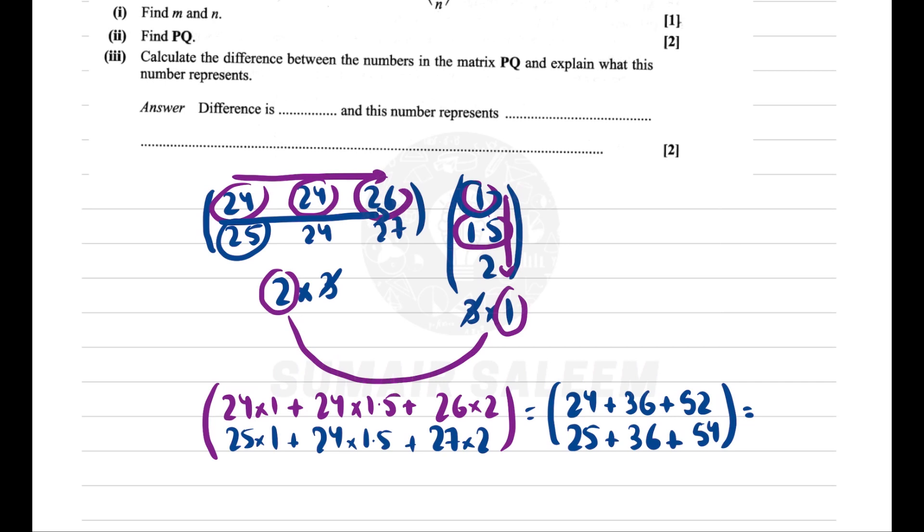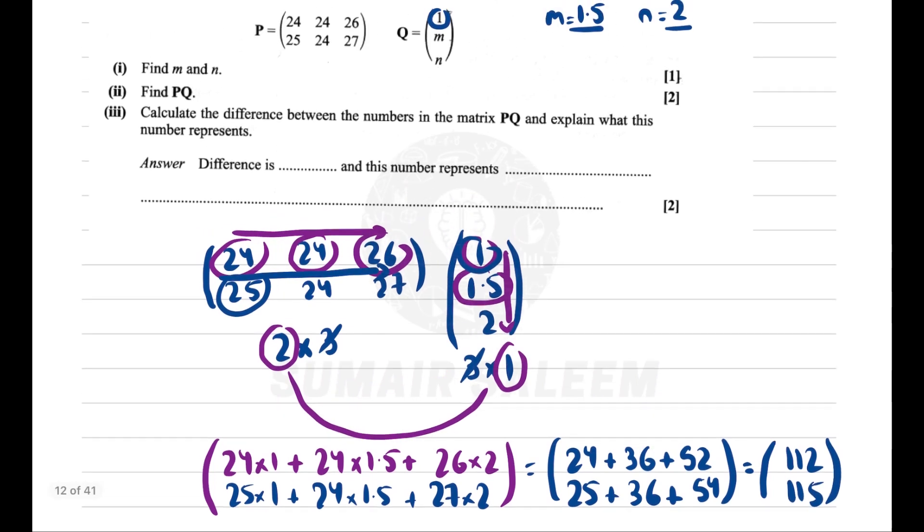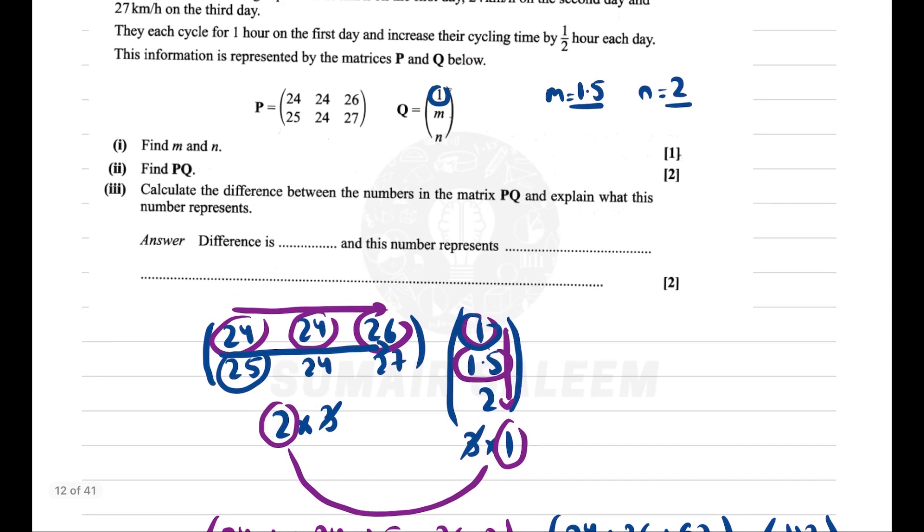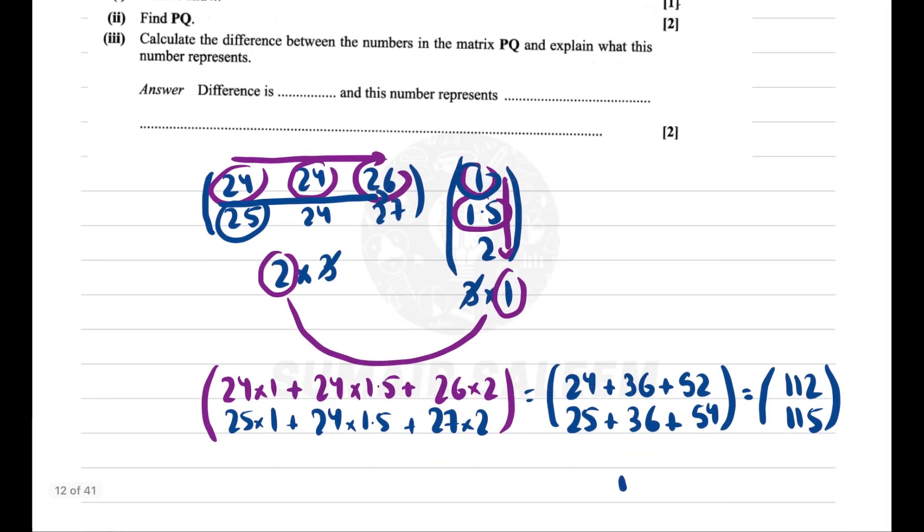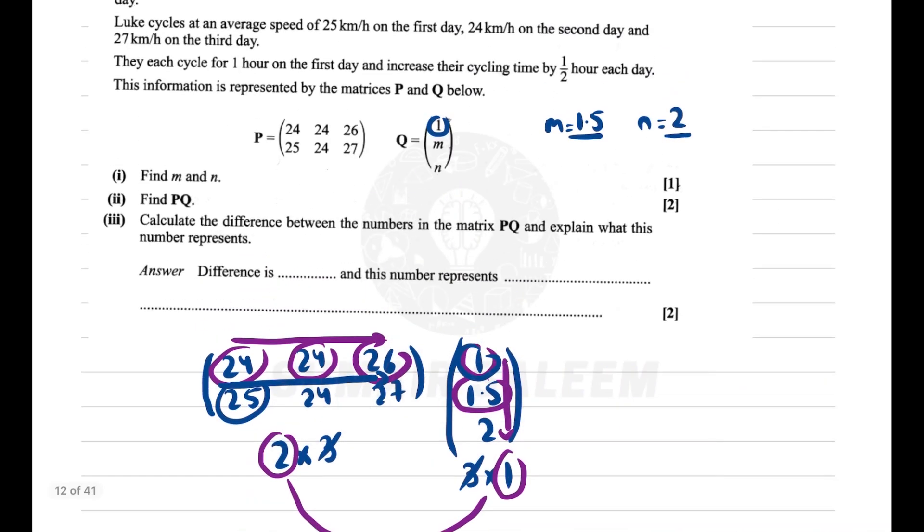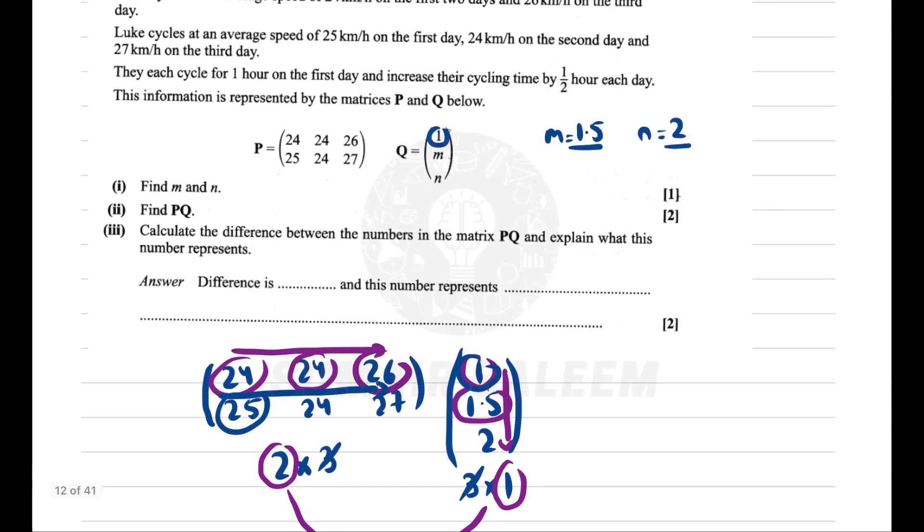Adding these: 24 plus 36 plus 52 equals 112, and 25 plus 36 plus 54 equals 115. The difference is 115 minus 112, which is 3. What does this represent? The numbers represent the distance traveled.